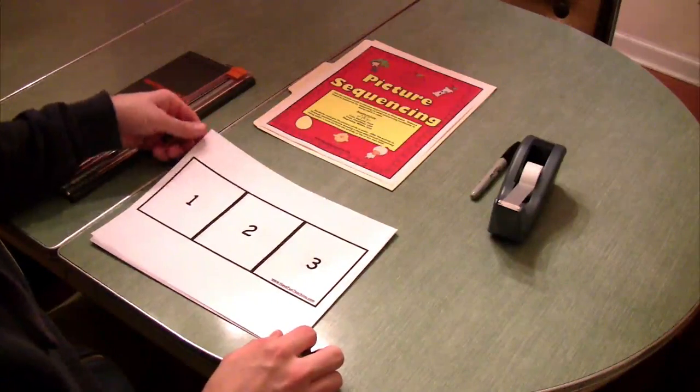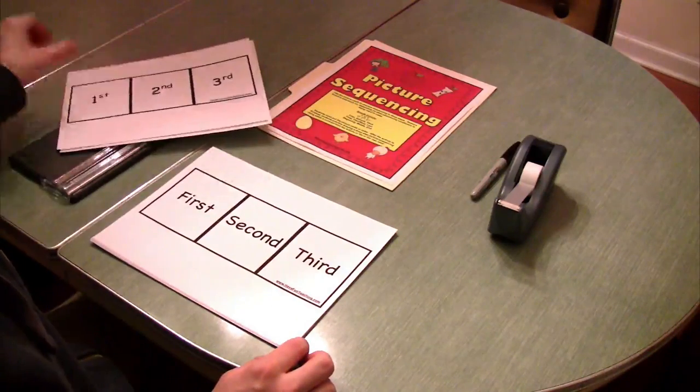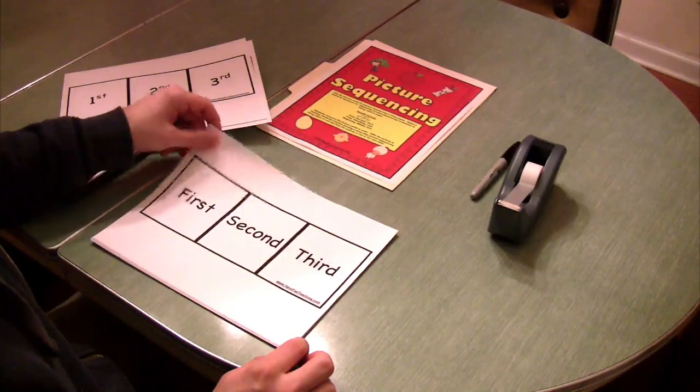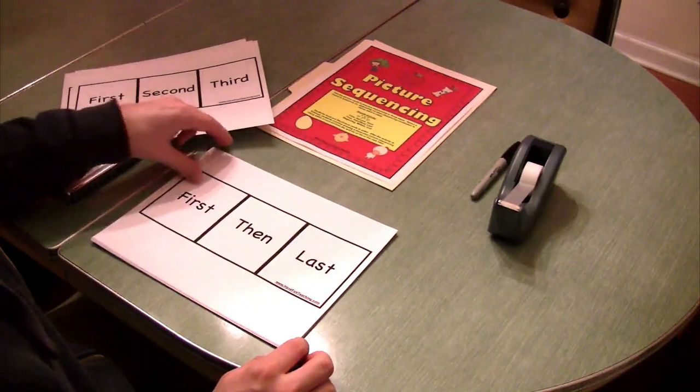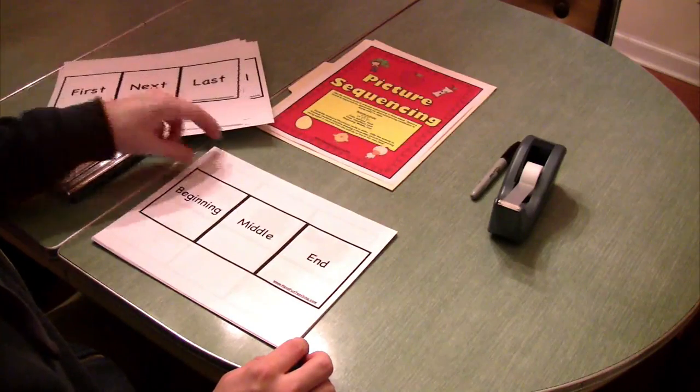Here we have the sequencing mats. We have one, two, three. First, second, third. First, second, third in word form. First, then, last. First, next, last. And beginning, middle, end.